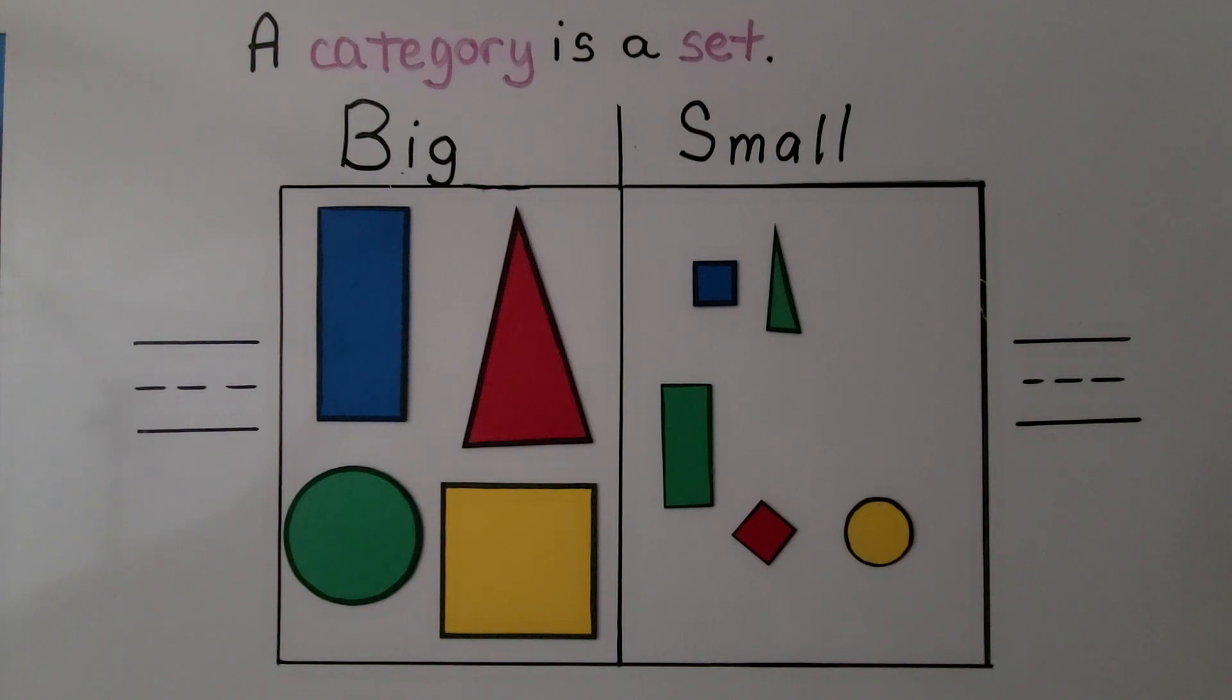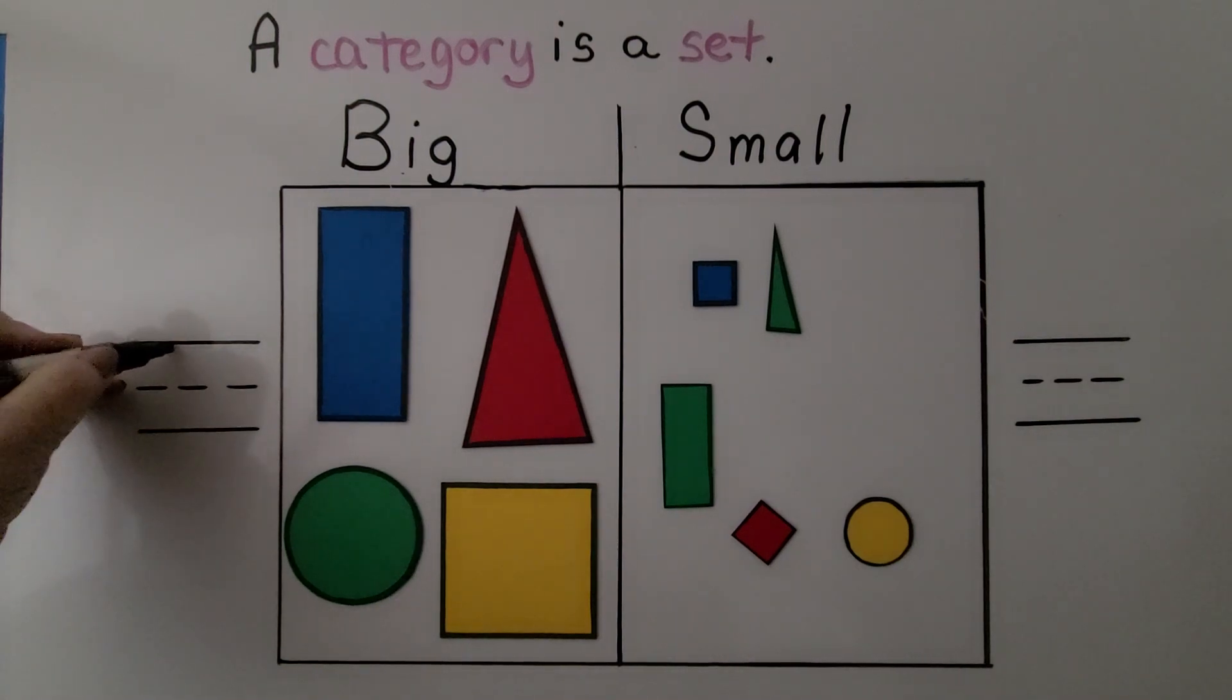Now we can count the big shapes and write the number. There are 1, 2, 3, 4 big shapes. We can write the number 4.